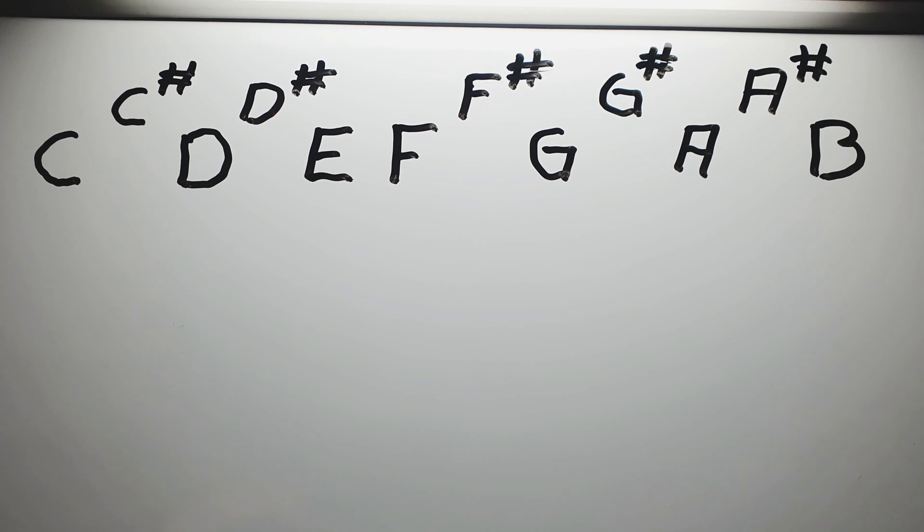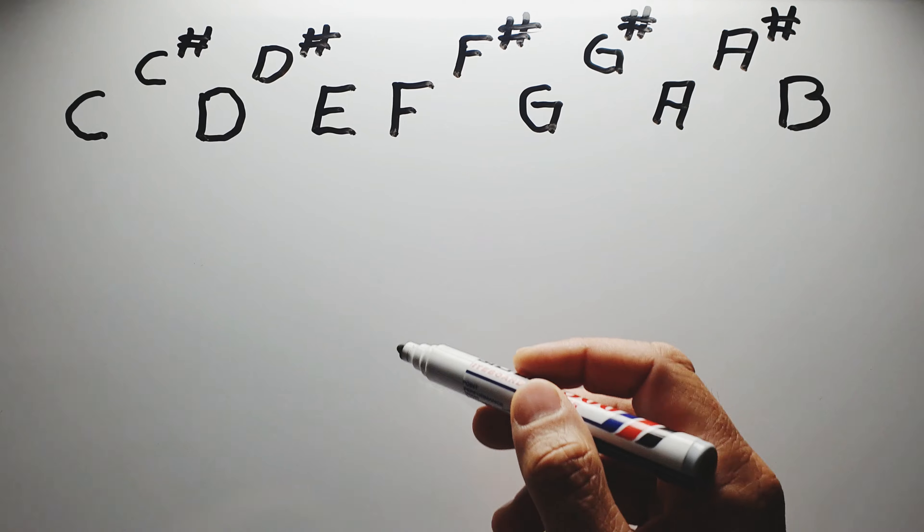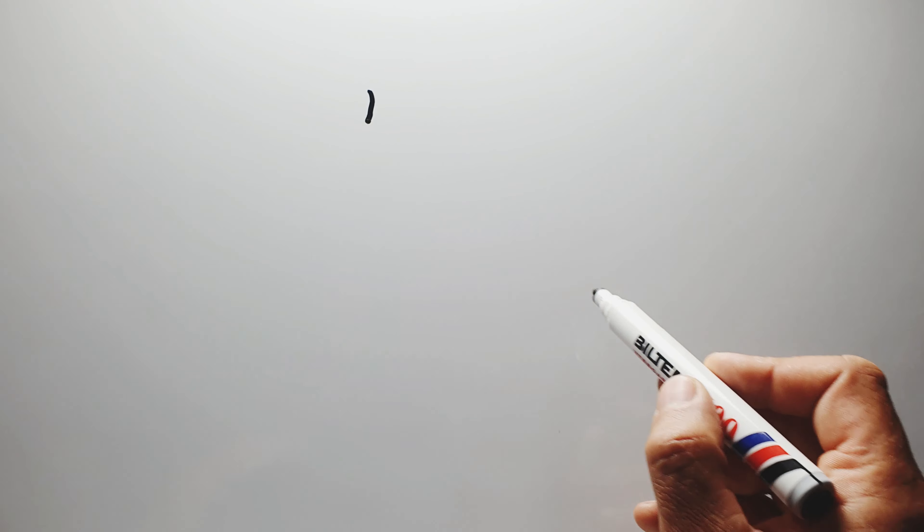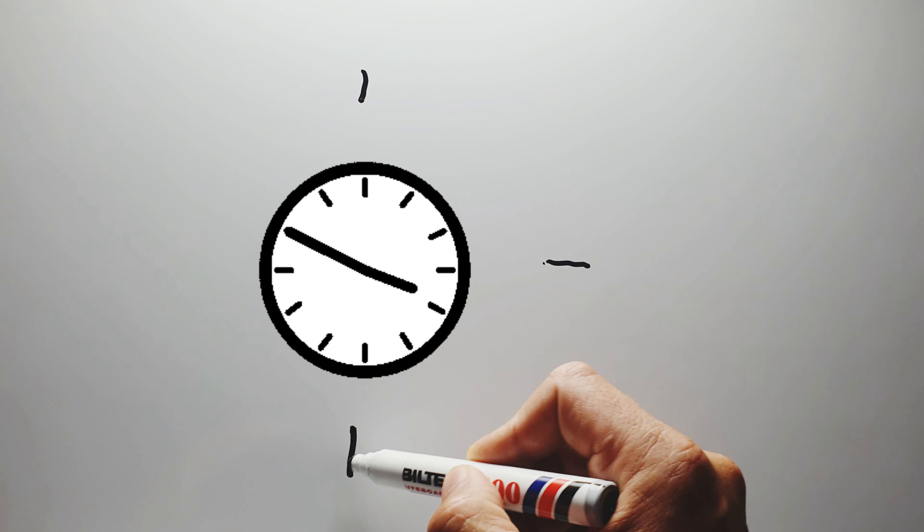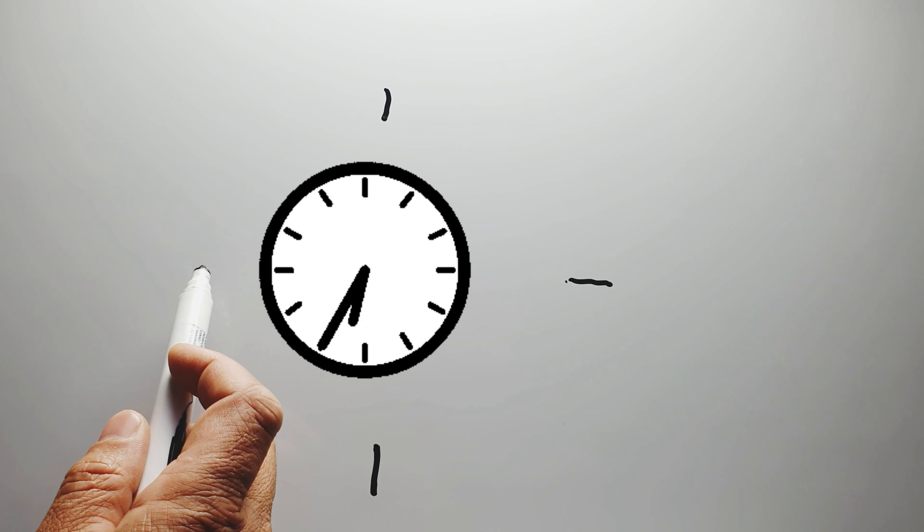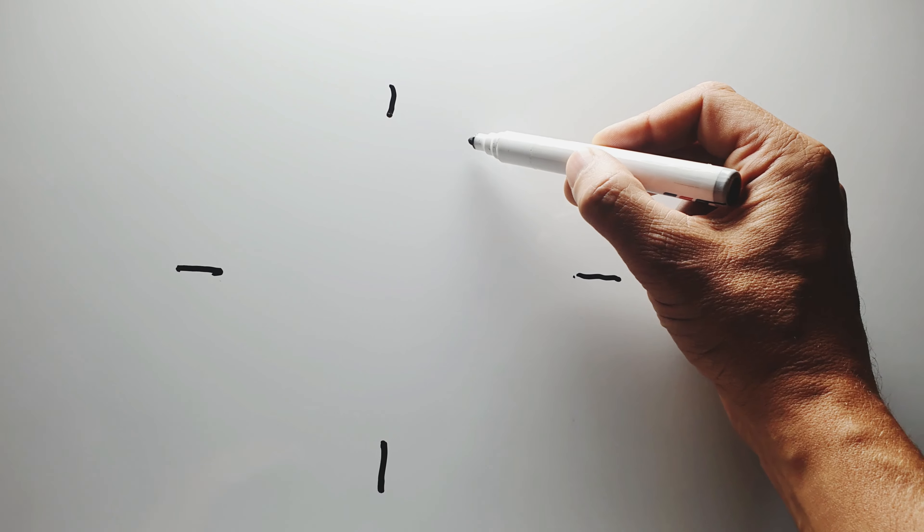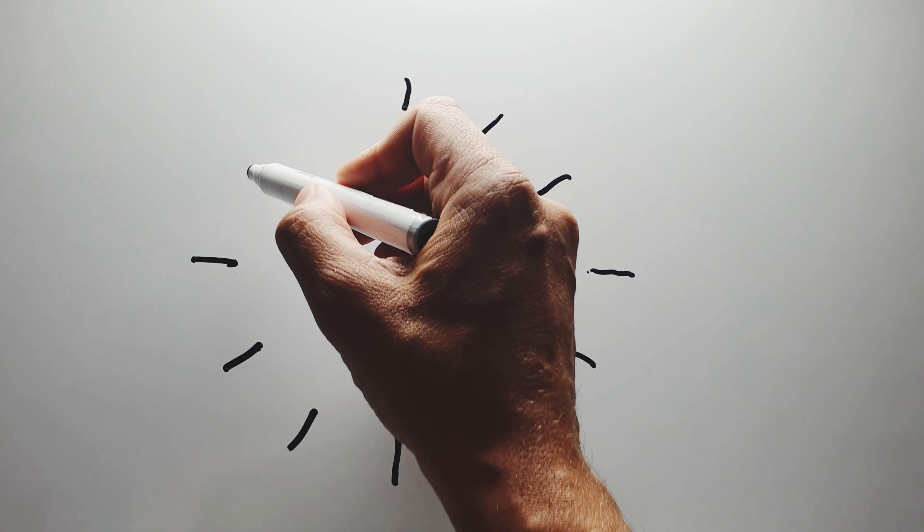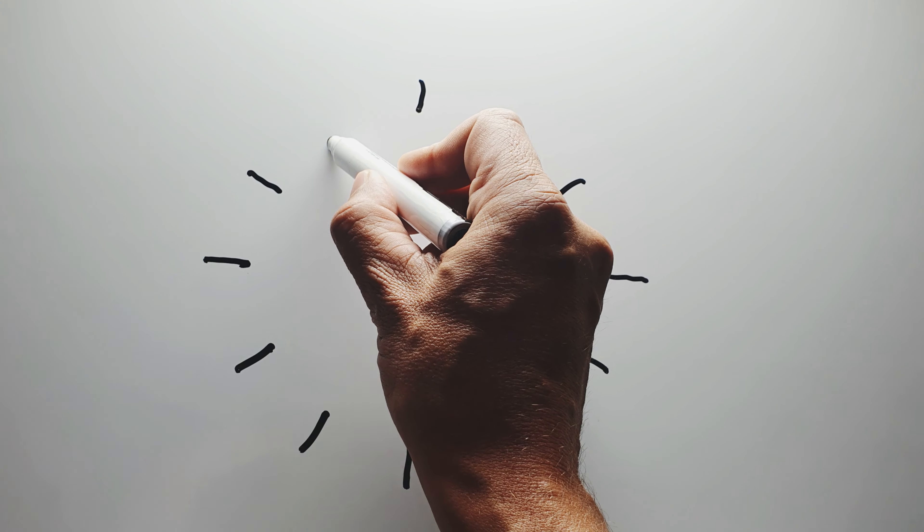And I will write down the circle of fifths. Starting with a line at 12 o'clock, and one at 3 o'clock, and one at 6, and one at 9. And then filling out the rest in between: 1 o'clock, 2 o'clock, 10, 11.